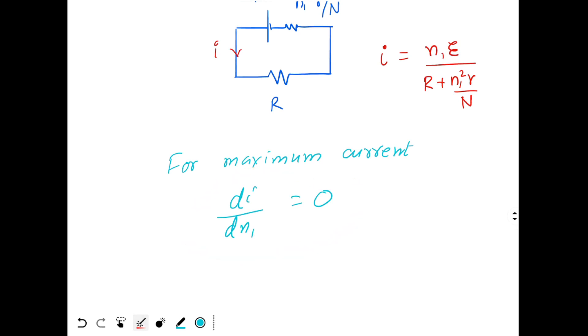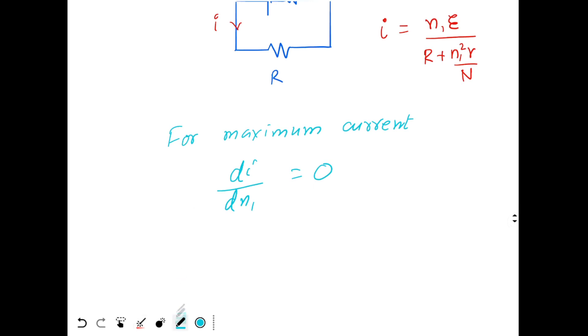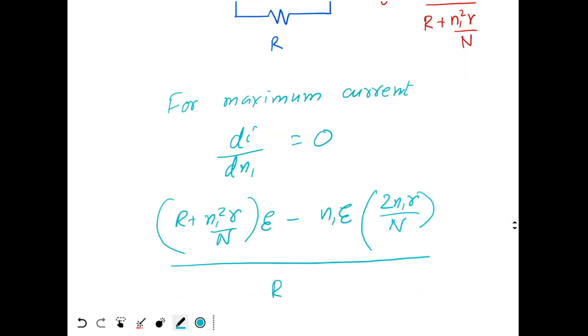So I just need to differentiate the function I over here. So when you differentiate this with N1, what do you get? You will get R plus N1 square r by N times E minus N1 E times 2N1 r by N divided by R plus N1 square r by N whole square and I want to make this equal to 0.